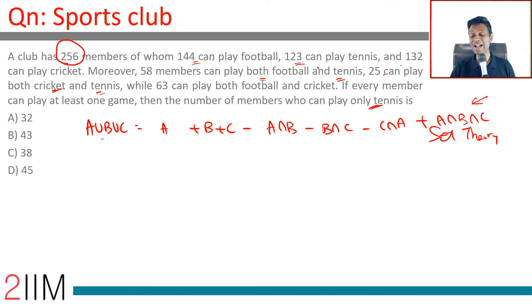So 256 equals 144 plus 123 plus 132 minus 58 minus 25 minus 63 plus x. These three we need to add: 3 plus 5 is 8, plus 8 is 16, 6 and 1 is 7, plus 2 is 9, 9 plus 5 is 14. So minus 146.